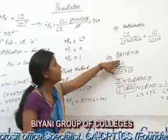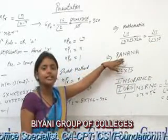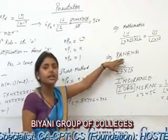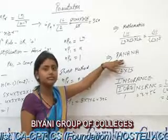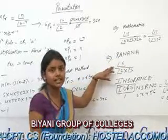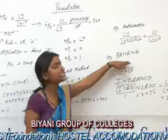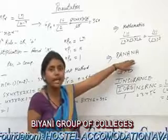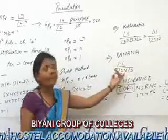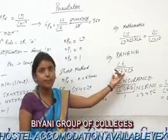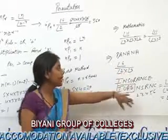Similarly, the value for the word BANANA: the question is, in how many ways can BANANA be arranged? The total number of alphabets is 6, and A is repeated 3 times and N is repeated 2 times. So the value is equal to factorial 6 upon (factorial 2 into factorial 3).